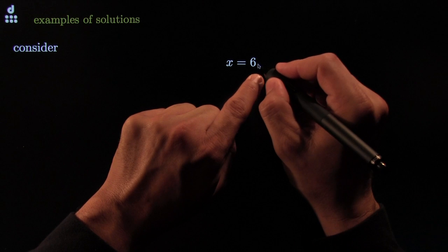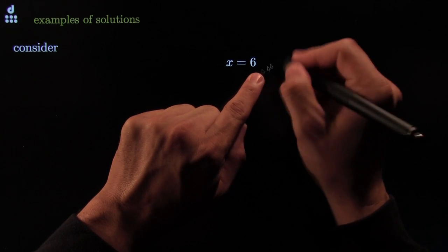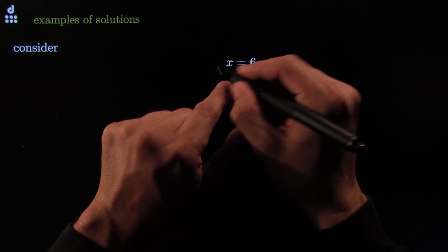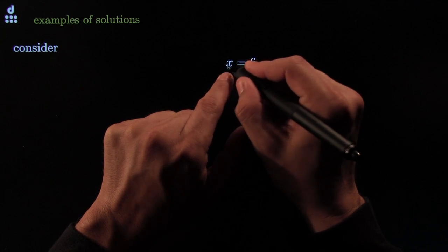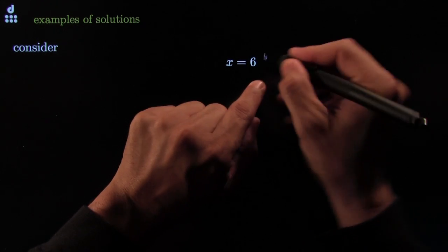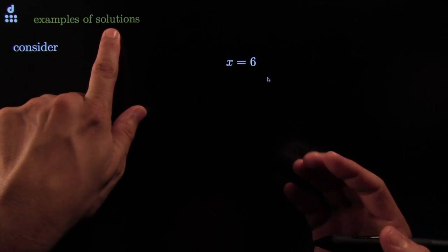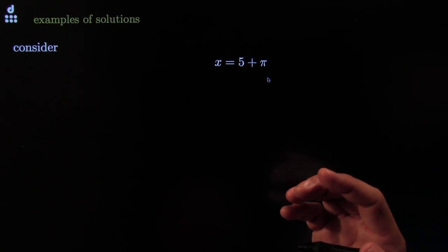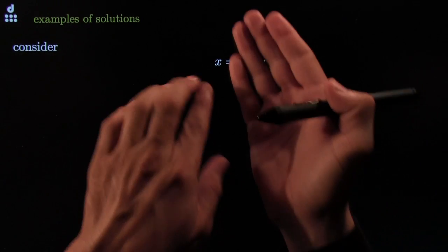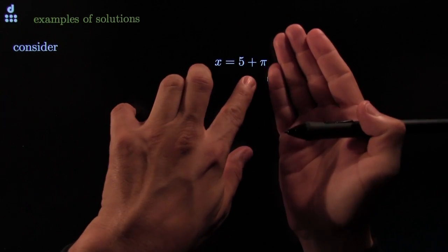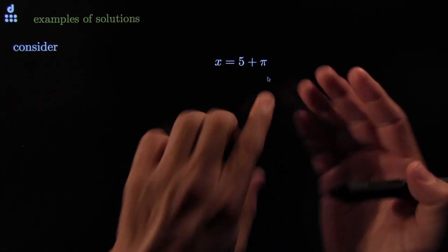If you get to the point on the equation when you have x equals blah, you might already be done. So long as this blah over here has no x's in it. This is called isolating x. X is all by itself on one side. X is equal to blah. And there are no x's on the other side. This is what we call a solution.